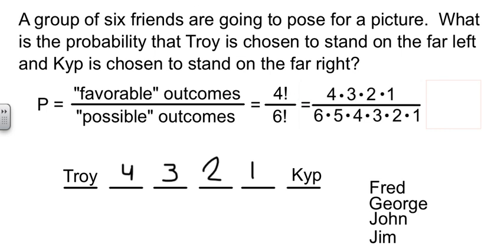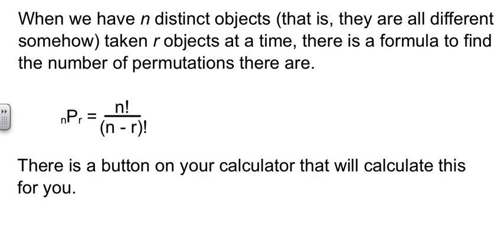I'm going to show you how you can work with this without your calculator. 4 times 3 times 2 times 1 cancels out 4 times 3 times 2 times 1. What are we left with, then? One chance out of 30. If you used your calculator there, you would have had 24 over 720, which would reduce to 1 out of 30.